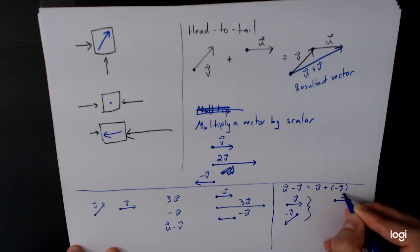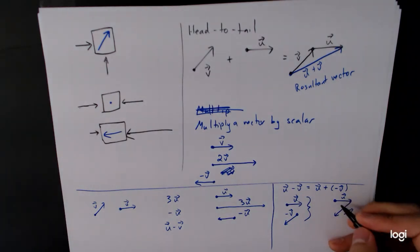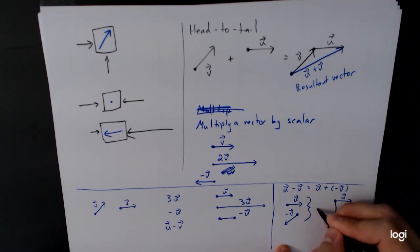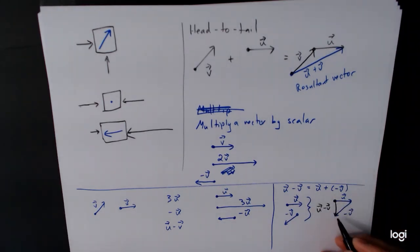And so if we take these two things together, u plus negative v, put the tail of negative v to the head of u. And then the resultant vector is going to be this: u minus v. It starts from the tail of the first and ends with the head of the last. And so this is the basic geometry of vectors.